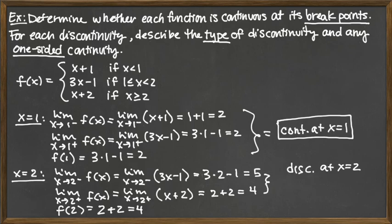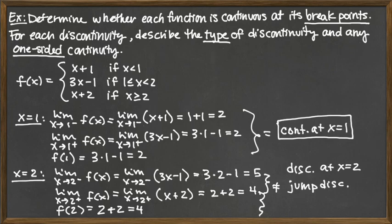Looking at the two one-sided limits, they're both finite but not equal to each other — this means it's a jump discontinuity. For one-sided continuity, the function value equals 4, which equals the right-hand limit. Since the function value equals the right-hand limit, the function is right continuous at x equals 2. That's what's happening at the other breakpoint.